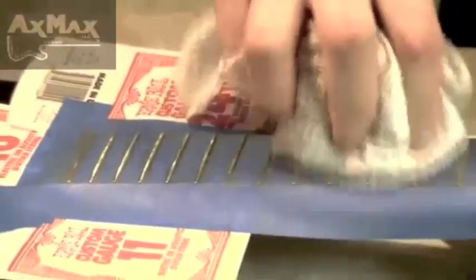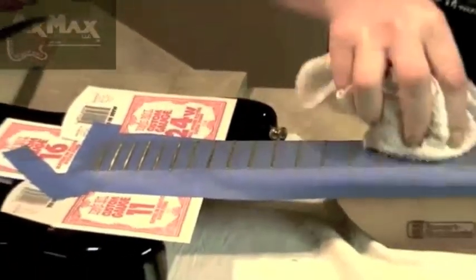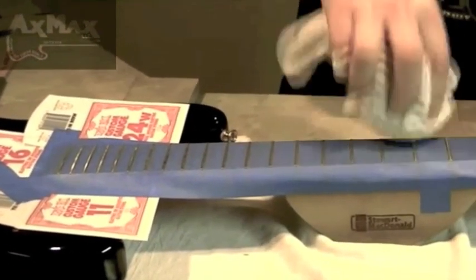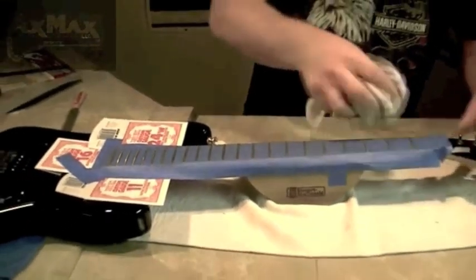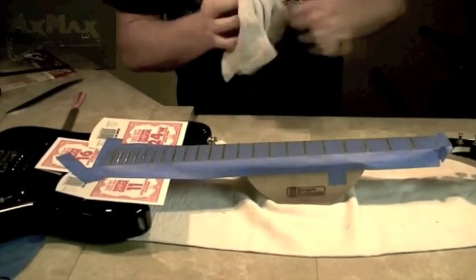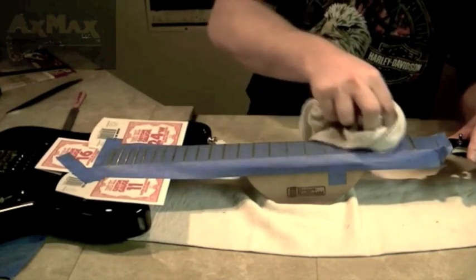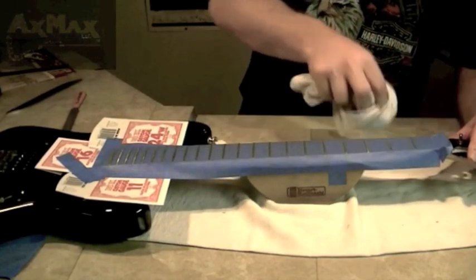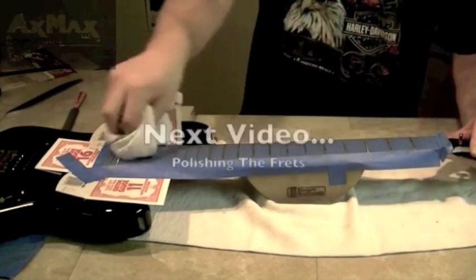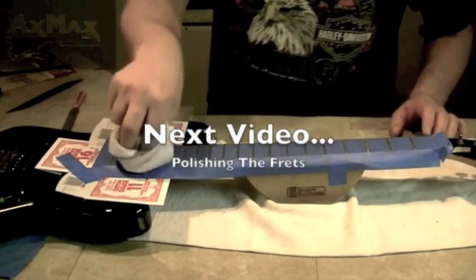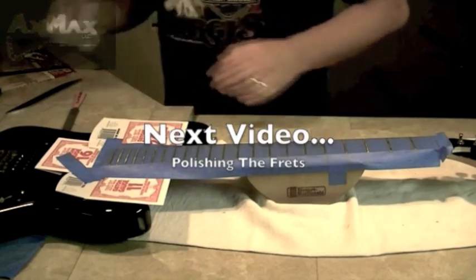Okay, let's wipe that down and get all the filings off. You'd rather have that in the rag than sitting on the fretboard, because what we're about to do is polish the frets and we want to get all those heavier pieces off of there. So I think I'm going to regroup here, get my micro mesh ready, and then we'll polish those frets up to a beautiful shine.